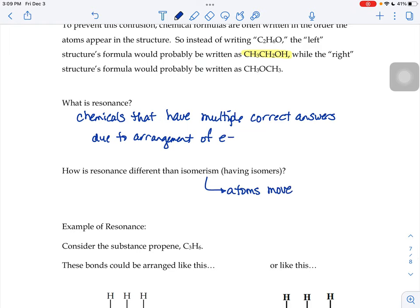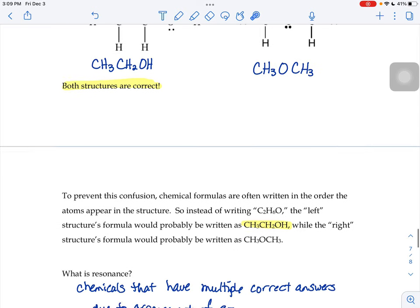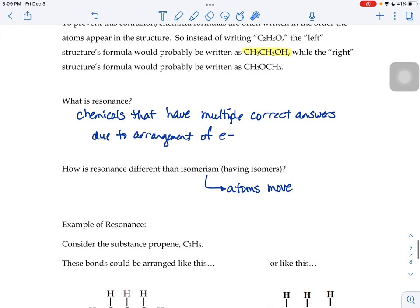So in that example up here, the oxygen was in between a C and an H here. And then we took that O and moved the O in between the two carbons to make this structure. That's an isomer, when the atoms rearrange and move around. Resonance is when the electrons move around.